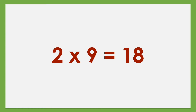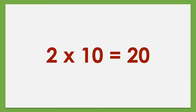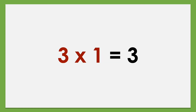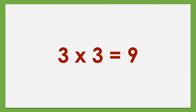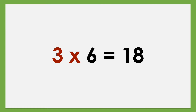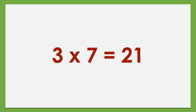2 times 9 equals 18, 2 times 10 equals 20, 2 times 11 equals 22, 2 times 12 equals 24. Set of 3: 3 times 1 equals 3, 3 times 2 equals 6, 3 times 3 equals 9, 3 times 4 equals 12, 3 times 5 equals 15, 3 times 6 equals 18, 3 times 7 equals 21, 3 times 8 equals 24.